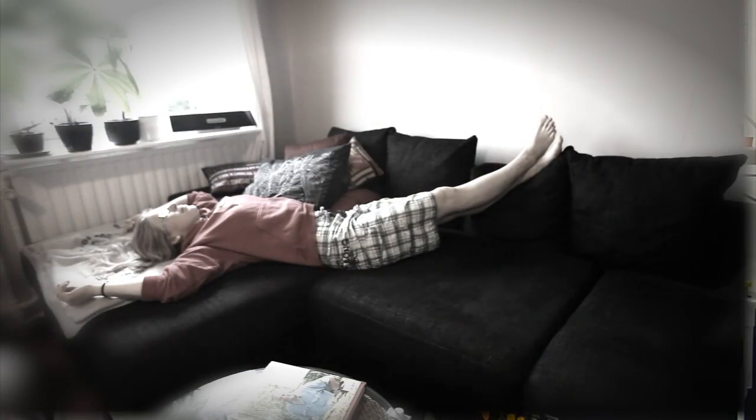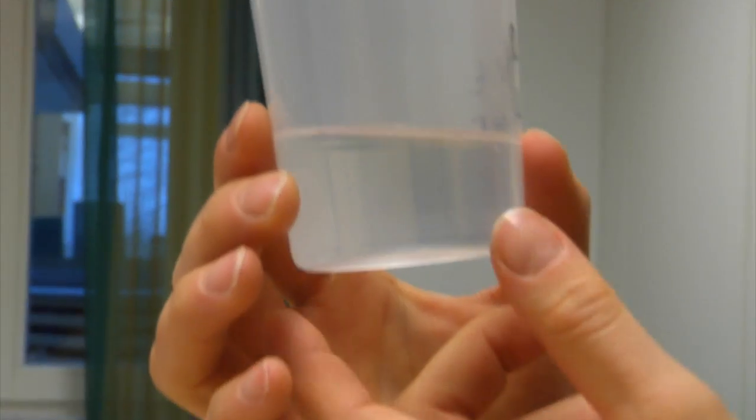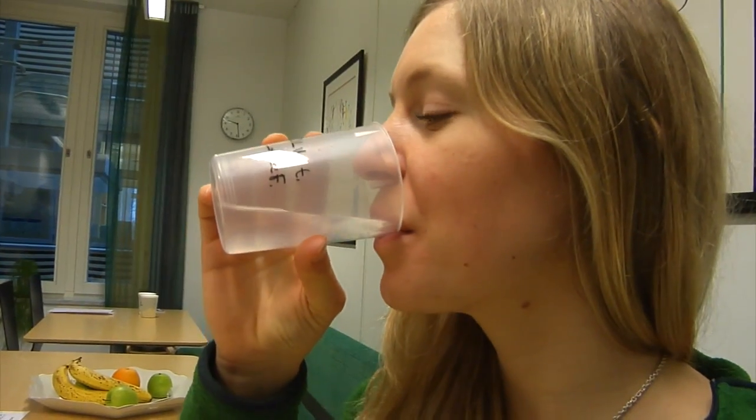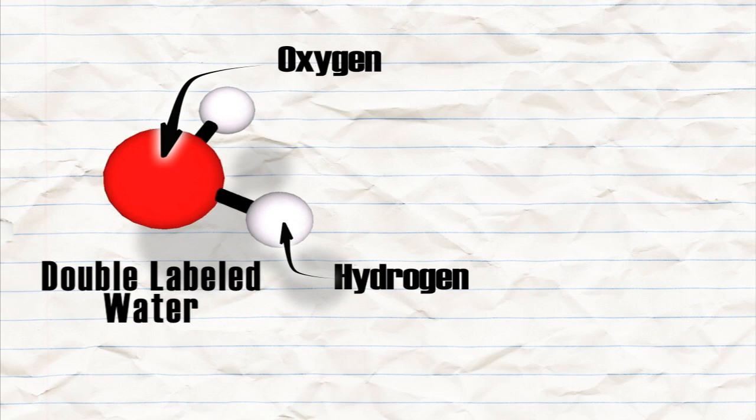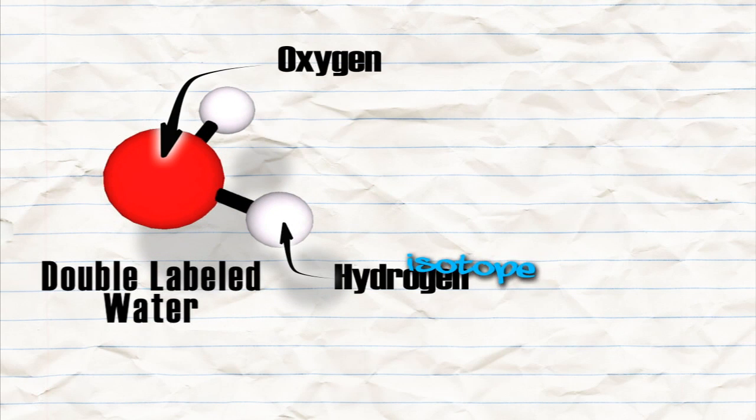The experiment involves two phases: during two weeks, we are going to be as passive as possible with as little exercise as possible, and then during two more weeks we will exercise as much as possible, and then we will see how big the difference is in energy expenditure. First, we drink a dose of so-called double labeled water — normal water except that both the hydrogen and oxygen atoms are isotopes of their normal form.